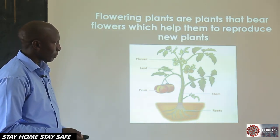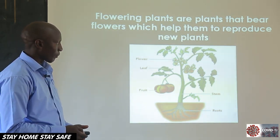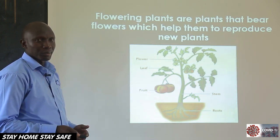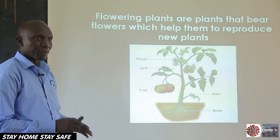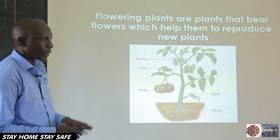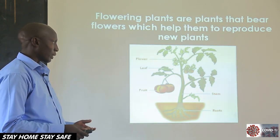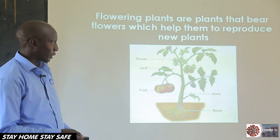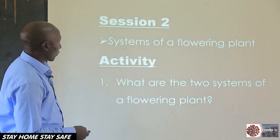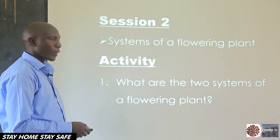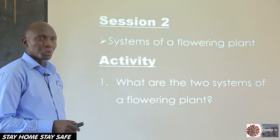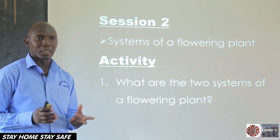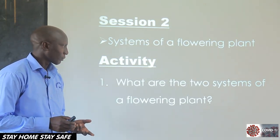We have a good diagram here of a flowering plant. If you see a plant bearing a flower, then that plant is said to be a flowering plant. We are going to look at the details of each part. In our next section, we want to see: what are those two systems, the two main parts that make up a flowering plant?